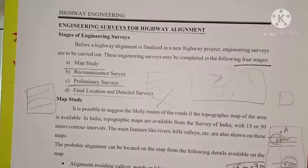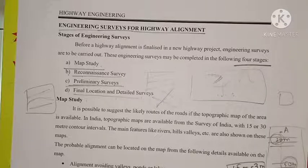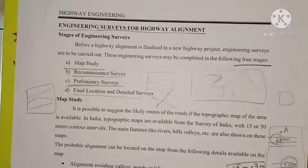When aligning routes on hilly areas, special considerations are required. These include stability, drainage, geometric standards, and resisting length. These are the considerations to be addressed while aligning a highway on hilly areas.